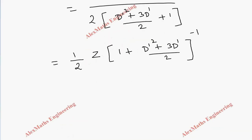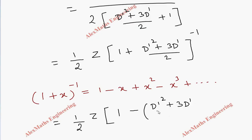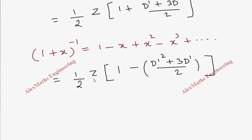We expand using the formula (1 plus x) power minus 1 equals 1 minus x plus x squared minus x cube plus dot dot dot. So this becomes 1/2 · z · [1 minus (D dash squared plus 3·D dash)/2]. All higher powers can be ignored because z is differentiable only once.